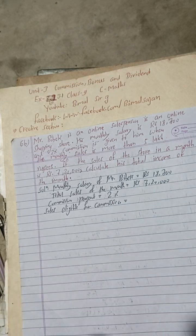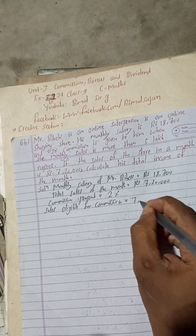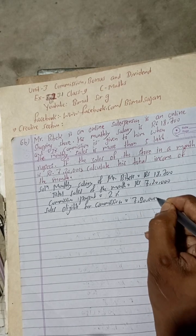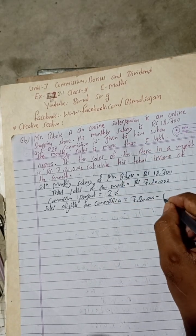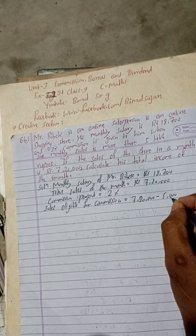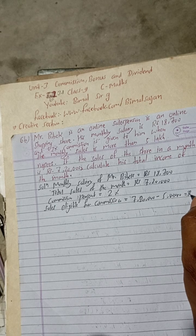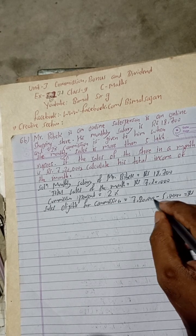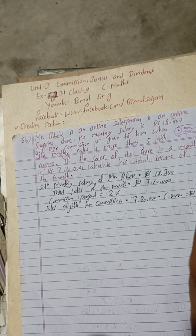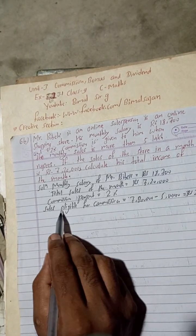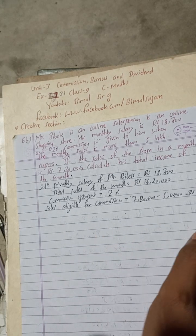For commission, the eligible sales will be total seven lakh twenty thousand minus five lakh, because for five lakh he will not get commission. So this is equal to Rs 2,20,000. For two lakh twenty thousand, he will get two percent commission. So sales eligible for commission is Rs 2,20,000.